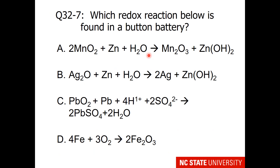So here is your last question: which redox reaction below is found in a button battery? All the reactions shown are correct. If you remember, a button battery is kind of expensive — what other metal is expensive? You can identify an alkaline battery as well as one of the choices, and a car battery. The last choice you haven't seen yet — that will be in the next lecture. See you later.